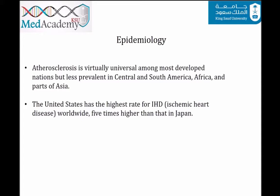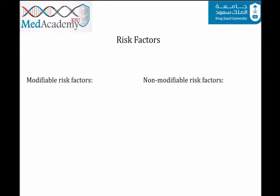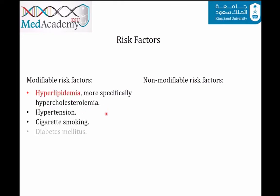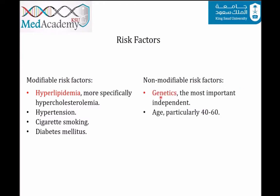The prevalence and severity of atherosclerosis and ischemic heart disease have been correlated with a number of risk factors. Risk factors are categorized into two groups: modifiable and non-modifiable. Modifiable factors include hyperlipidemia — specifically hypercholesterolemia, where LDL increases risk and HDL decreases it — hypertension, cigarette smoking, and diabetes mellitus. Non-modifiable factors include genetics (the most important independent factor), age (particularly between 40 and 60), and gender — males and post-menopausal females being at higher risk, while pre-menopausal females are relatively protected due to estrogen.